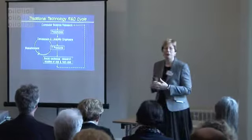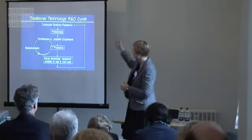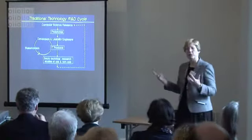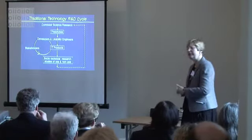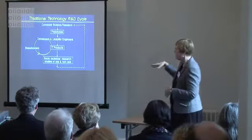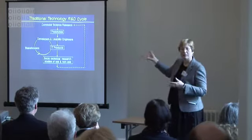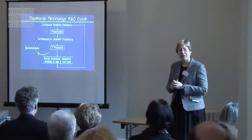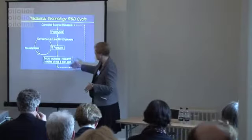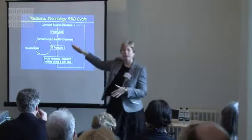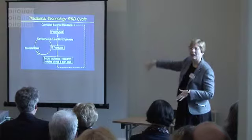This chart shows the traditional technology R&D cycle. Typically you would have computer science research going on; they would produce proof-of-concept prototypes that may or may not then be picked up by software developers and usability engineers and social scientists to interact with stakeholders to produce products that are deployed. Sociotechnical research would then study the use and non-use of these items — email, etc. — with the idea that results would feed back into computer science research. I drew a dotted line on that feedback loop because a lot of times that doesn't happen.